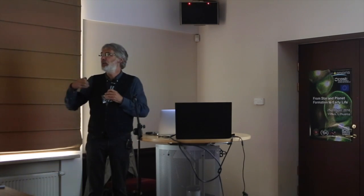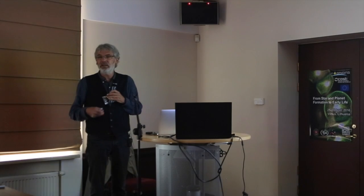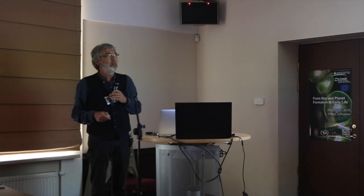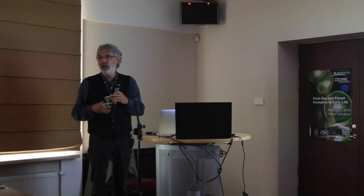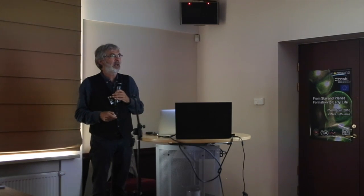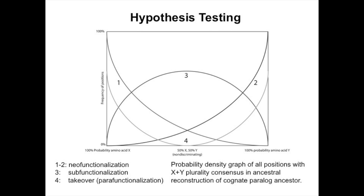We can ask: if we take these molecular sequences and reconstruct the ancestral sequence, what does it contain at positions where the genetic code requires valine or isoleucine? There are three possibilities. First, neo-functionalization: both amino acids were already part of the genetic code when the two enzymes diverged, with another system charging tRNAs. Second, there could be a takeover: the ancestral code used only valine, so we would find only valine in the ancestral sequence and isoleucine evolved later. Third, sub-functionalization: the ancestral genetic code didn't care — it incorporated valine or isoleucine interchangeably as long as the amino acid was hydrophobic.